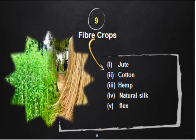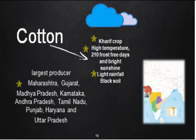The most important fiber crop of the country is cotton. India is the largest producer of cotton in the world, and Gujarat is the largest producer of cotton within the country. Major cotton-producing states include Madhya Pradesh, Gujarat, Maharashtra, Karnataka, Andhra Pradesh, Tamil Nadu, Punjab, Haryana, and Uttar Pradesh. Cotton is a Kharif crop requiring hot and humid climate; frost is dangerous. It requires bright sunlight and light rainfall. The suitable soil is black soil, also known as regur or cotton soil.